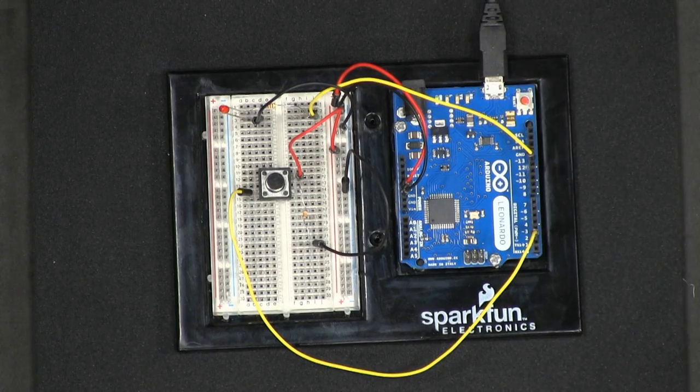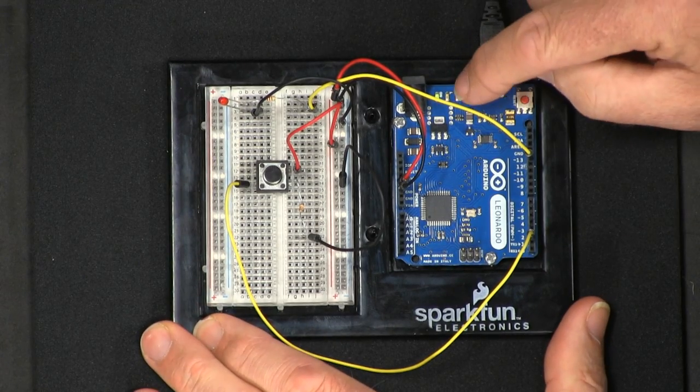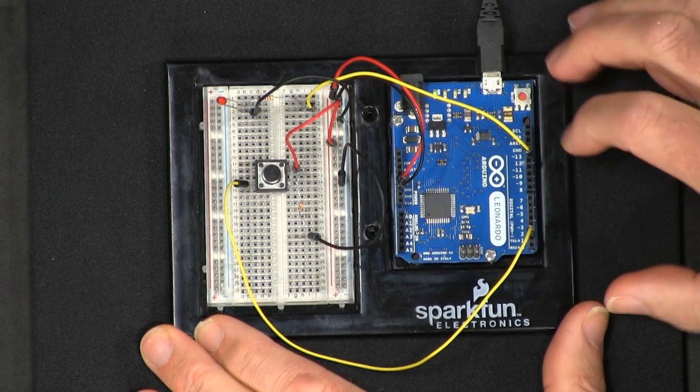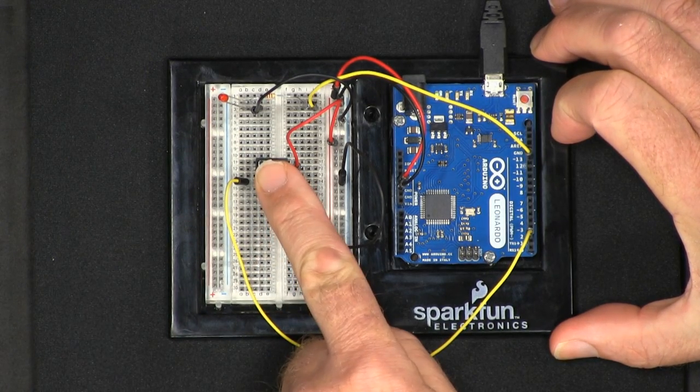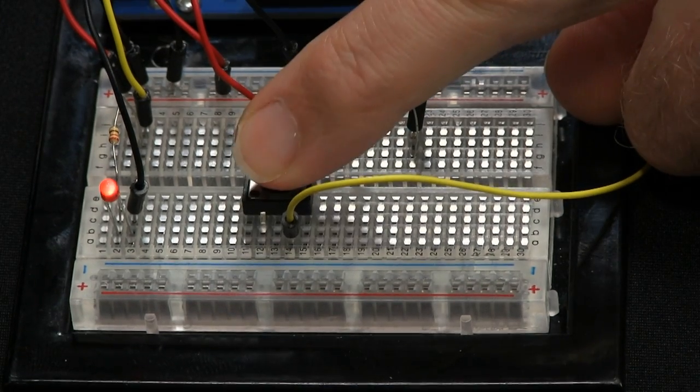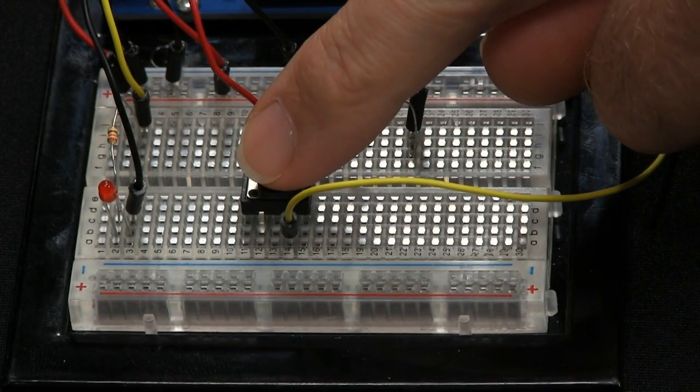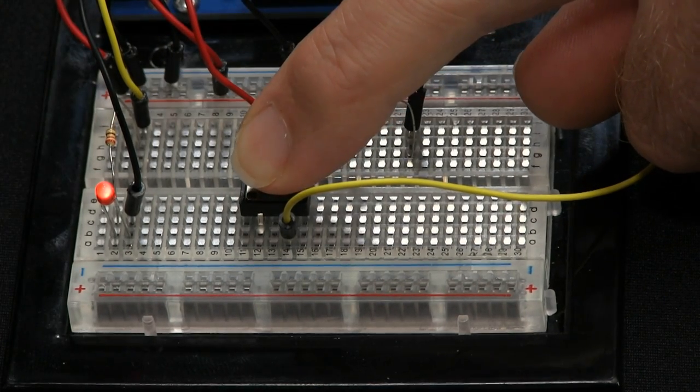And it says that it has done uploading. So pin 13, if you remember there's an LED on the board but we've wired up in parallel with it this additional LED. So if all is well and we press this button the LED should come on, and there you are, we have the circuit working. We have our Arduino communicating with a switch on input and with the LED on output, so luckily everything is working as we expected.